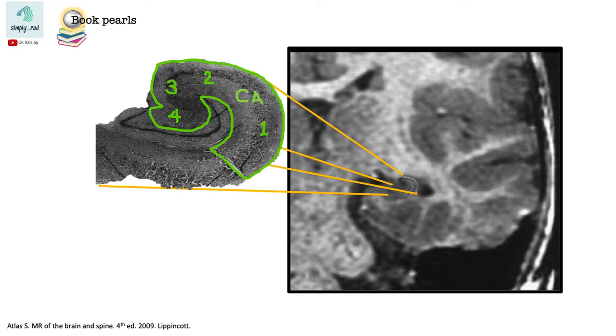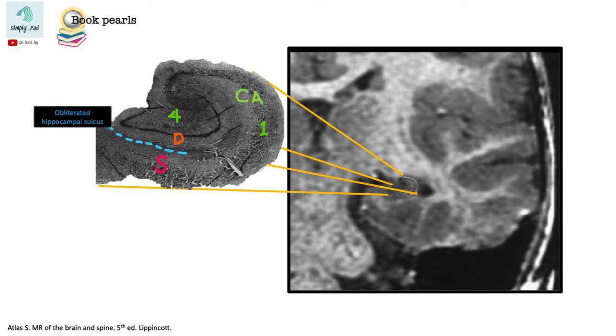The Cornu Ammonis has four portions, which are numbered 1, 2, 3, and 4. The Cornu Ammonis blends with the subiculum, which is part of the cortex that is in contact with the dentate gyrus. This contact between the dentate gyrus and the subiculum obliterates the Hippocampal sulcus.